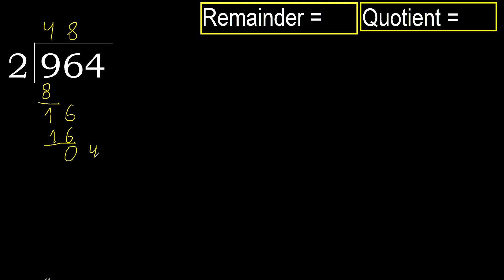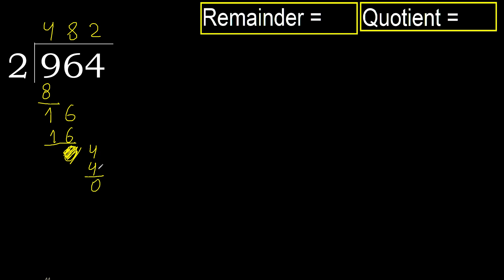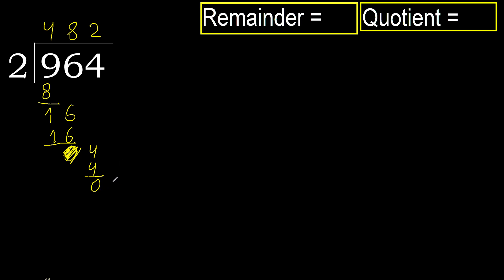Next: bring down, eliminate the 0. We have 4. 2 multiplied by 2 is 4 — it is not greater, ok. Subtract: 4 minus 4 is 0. Next, there is no number remaining, therefore we finish.